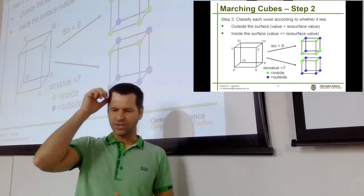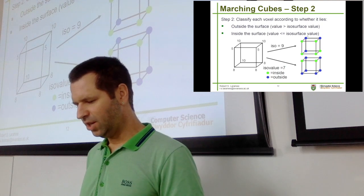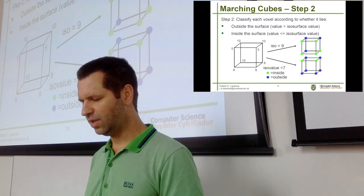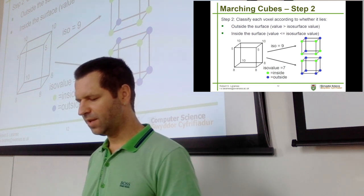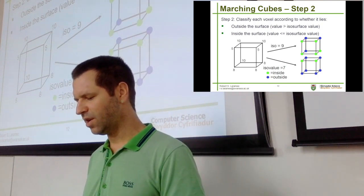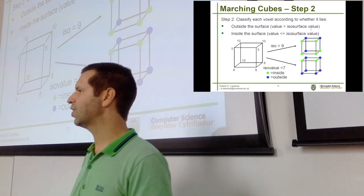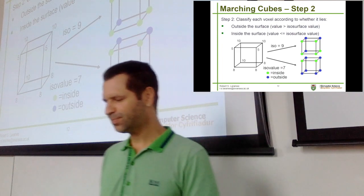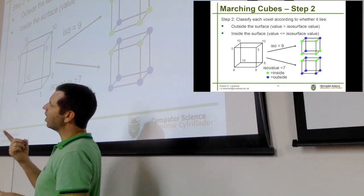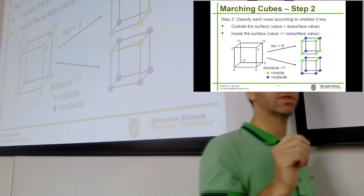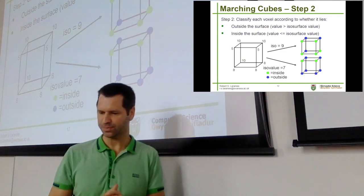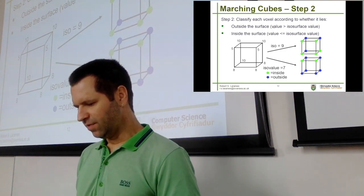Step two: we classify each voxel according to whether it lies outside the surface or inside the surface. This value is the value stored at the corners of the cube — a corner value. We evaluate it to see if it's greater than an isovalue or less than or equal to the chosen isovalue. The input to the marching cubes algorithm is the volume data and an isovalue — the user typically chooses an isovalue and says, show me the surface that corresponds to this isovalue.